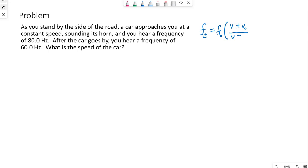Now in this particular case, the observer is not moving, us. And so this equation simplifies, and we have V over V minus plus V of the source.